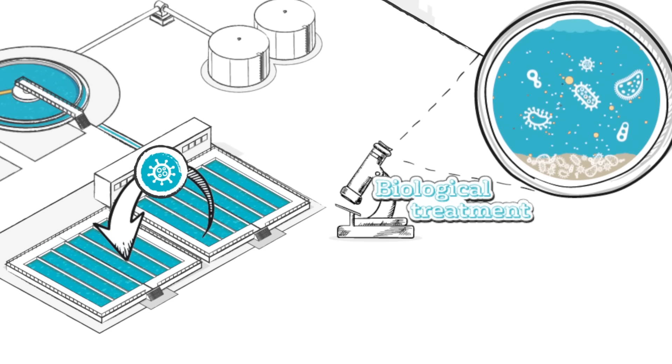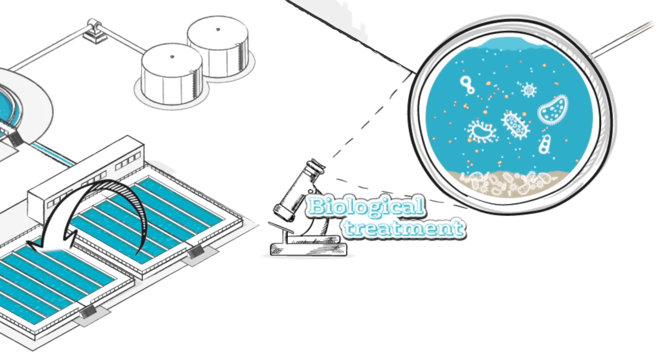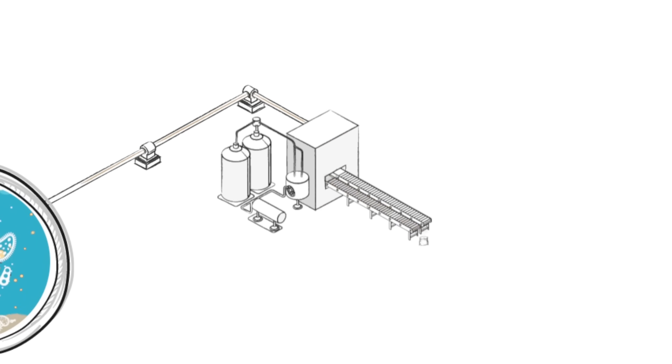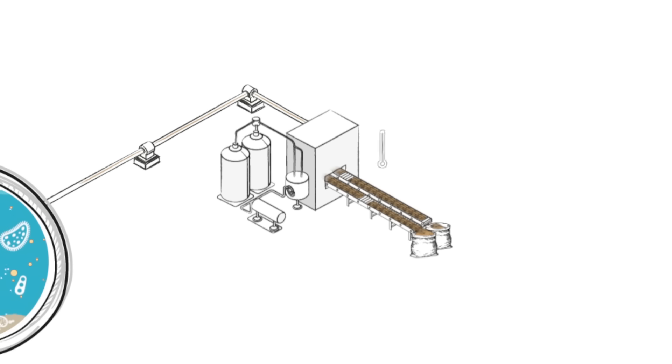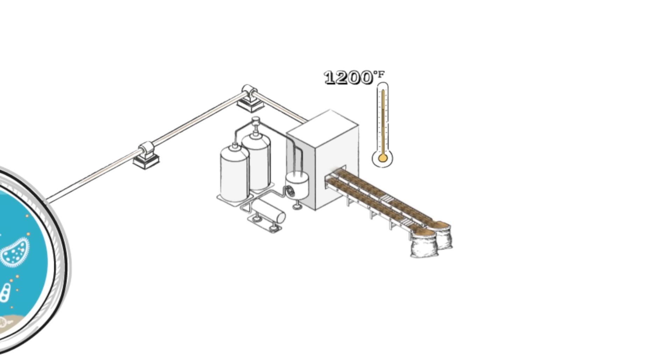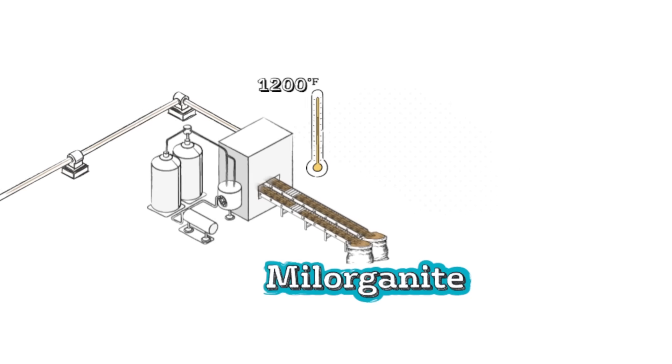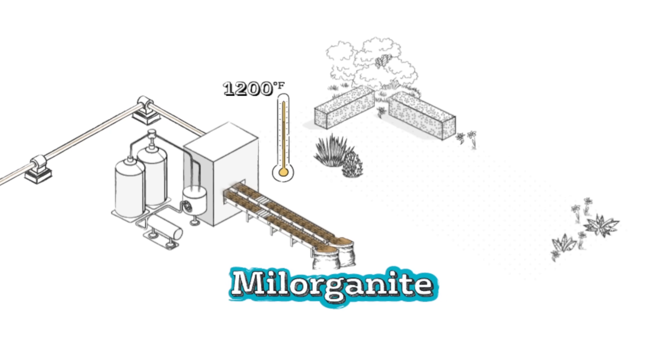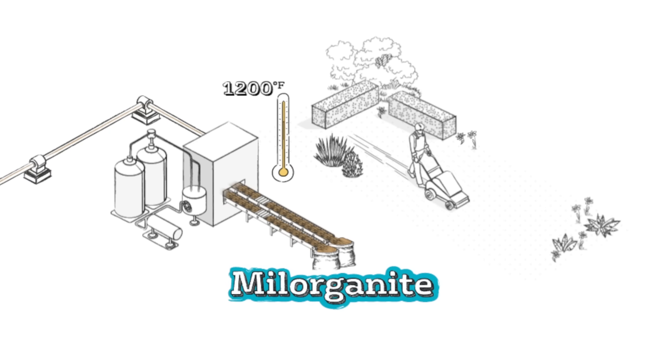The older bugs die and settle to the bottom. The sludge is pumped to the dewatering and drying facility, where the water is squeezed out and the product is heated in dryers that can reach temperatures of 1,200 degrees Fahrenheit. The final product is called Milorganite and is used to fertilize lawns, gardens, and golf courses throughout North America.